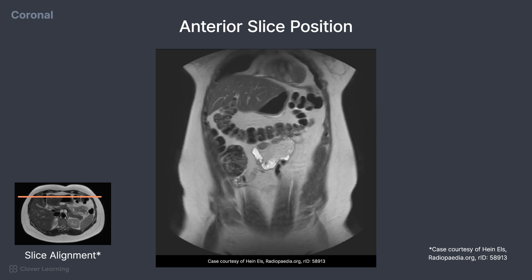Continuing posterior, towards the top of the image, you can see dark areas where the lungs are filled with air. Just inferior to the lungs is the diaphragm, with the liver located just inferior.